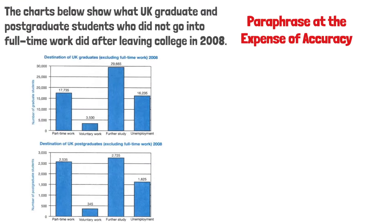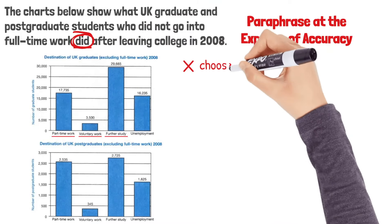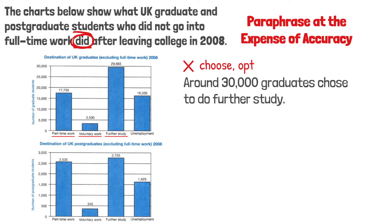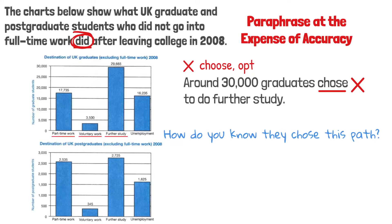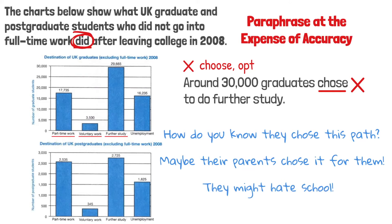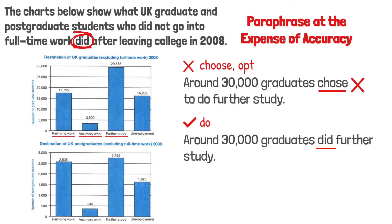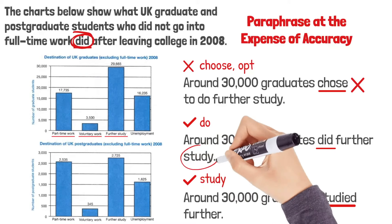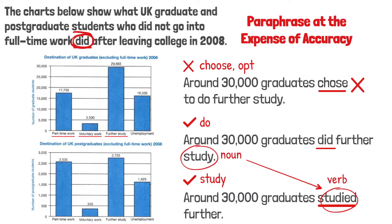Let's look at these graphs — they show what UK graduate and postgraduate students who did not go into full-time work did after leaving college. Note that the charts use the verb 'did': some did part-time work, some did voluntary work, and some did further study. You should stick to the original verb 'did' and not use verbs like 'choose' or 'opt.' Don't say 'around 30,000 graduates chose to do further study' — how do you know they chose this path? Maybe their parents forced them. You should just use 'did': around 30,000 graduates did further study. Or use 'study' as a verb: around 30,000 graduates studied further.